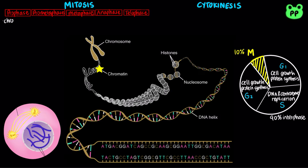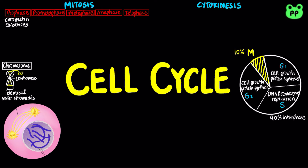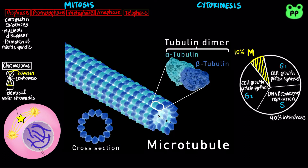During prophase, chromatin, which is the DNA content, becomes tightly coiled, condensing into discrete chromosomes. Each duplicated chromosome appears as two identical sister chromatids joined at their centromeres and along their arms by proteins known as cohesins. The nucleoli disappear, and the mitotic spindle, composed of centrosomes and the microtubules that extend from them, begins to form. Microtubules are a type of cytoskeleton that helps separate chromosomes during mitosis, and each centrosome is made of two centrioles.